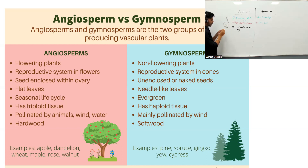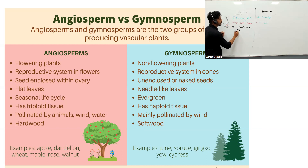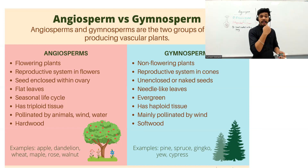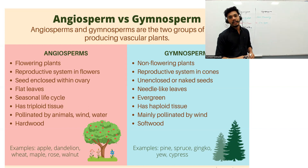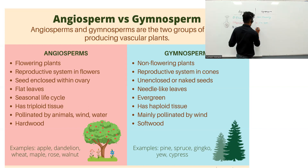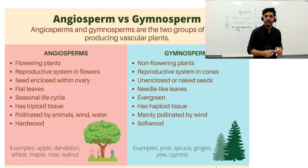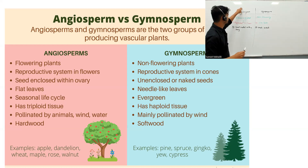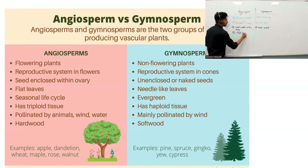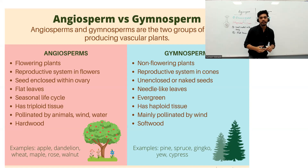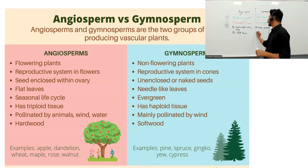In gymnosperms, seeds are unenclosed — they are naked seeds. There is no covering over them. In angiosperms, leaves are flat. In gymnosperms, leaves are needle-like.